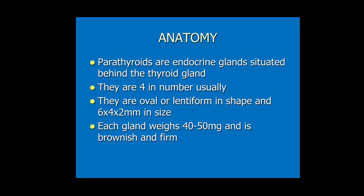Parathyroid glands are endocrine glands situated behind the thyroid gland. They are 4 in number usually, but can go up to 9 in number. They are oval or lentiform in shape, with a size of approximately 6 x 4 x 2 mm. Each gland weighs about 40–50 mg and is usually brownish and firm.